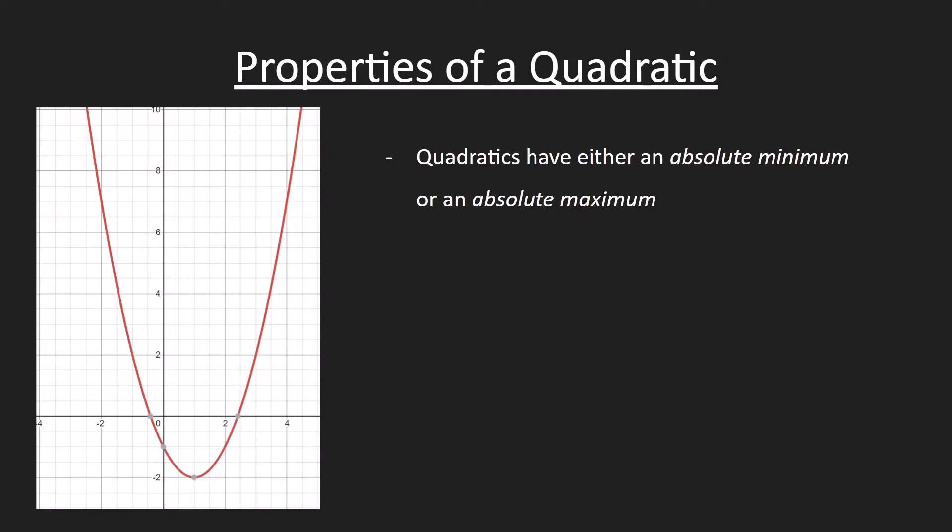Now we can talk about the properties of a quadratic. A quadratic equation has either an absolute minimum or an absolute maximum, as mentioned earlier. On the graph on the left, you see an absolute minimum. That's the lowest point that the graph will ever touch in this equation.